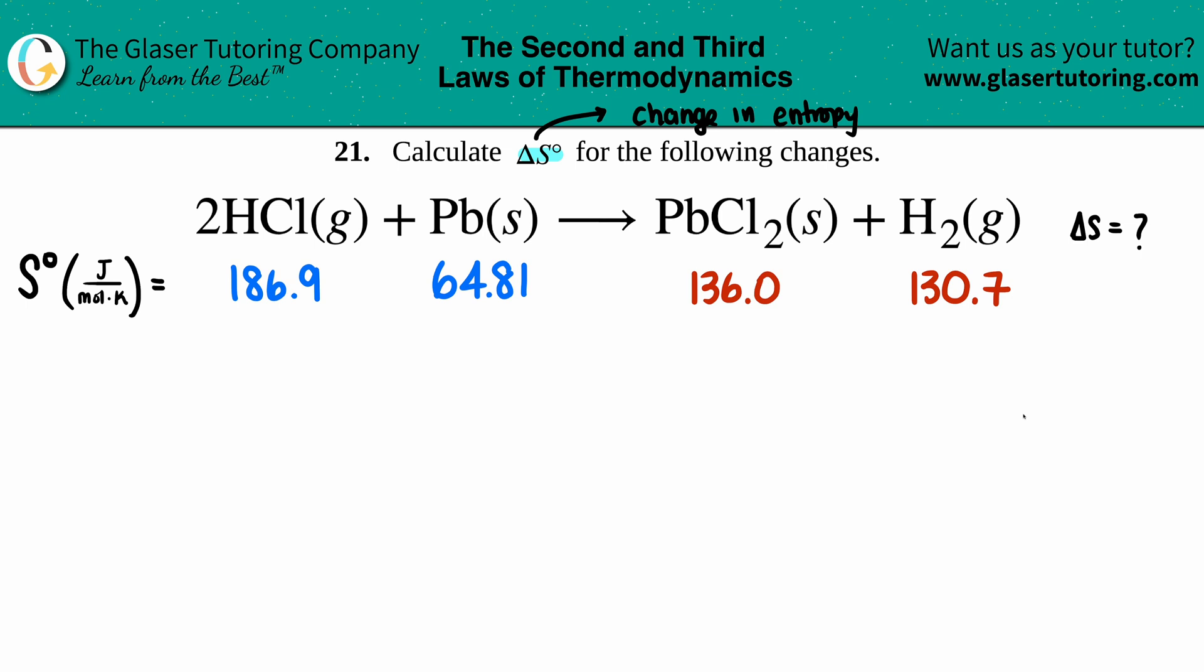If we're dealing with standards—that's what this little degree sign in the upper right corner of delta S means—you have to go to the back of the textbook to find your appendix values.